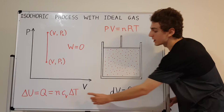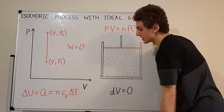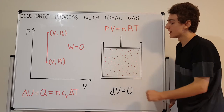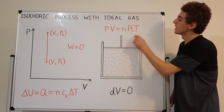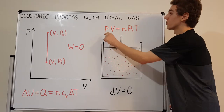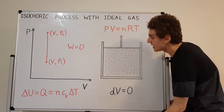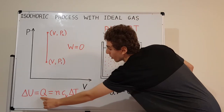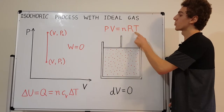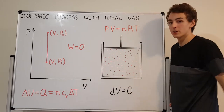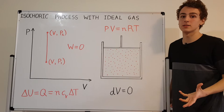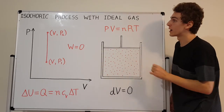If heat flows in and Q is positive, we get a positive delta T, which increases the temperature. If the temperature goes up, the product on the right-hand side of the ideal gas law increases, and since volume is constant, the pressure has to increase. So pressure and temperature increase and decrease together, because all other relevant quantities are constants. We can therefore say that pressure is proportional to temperature for an isochoric process.